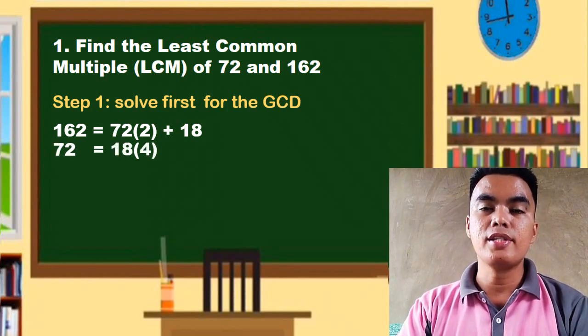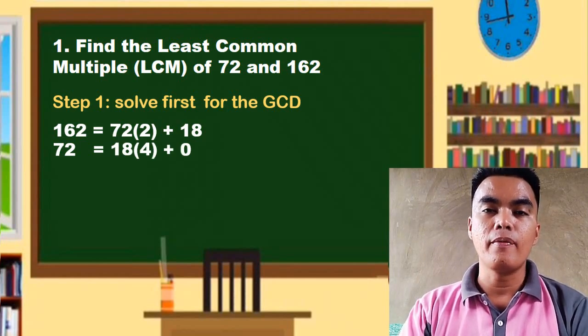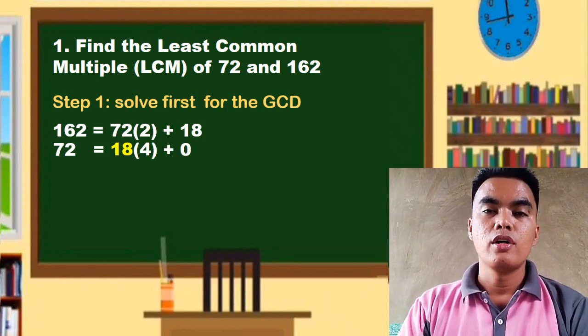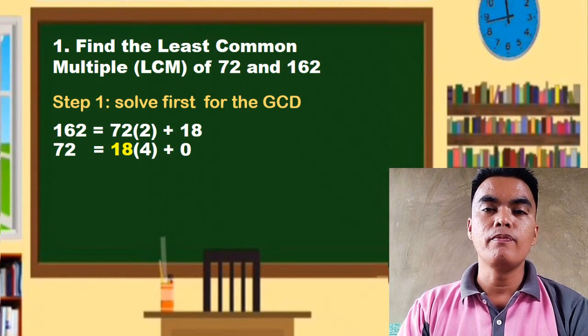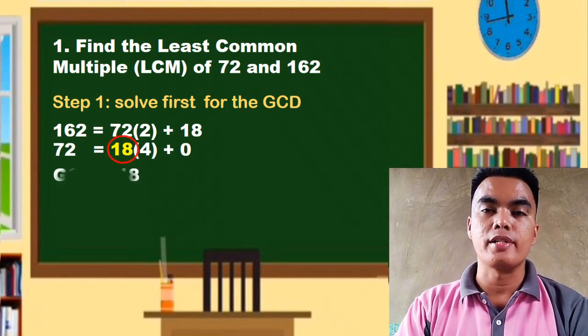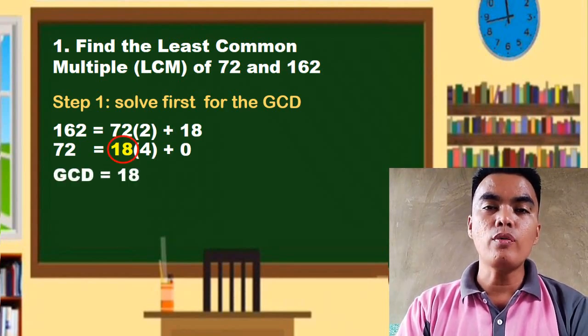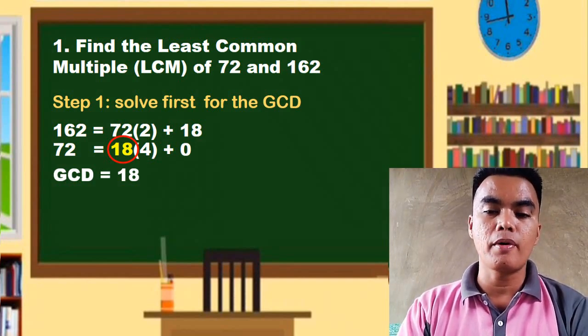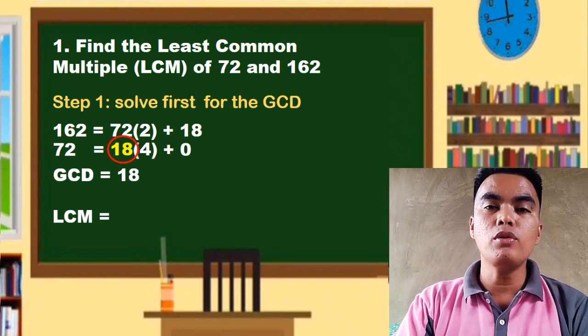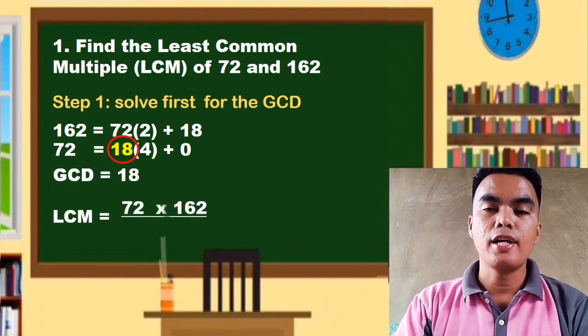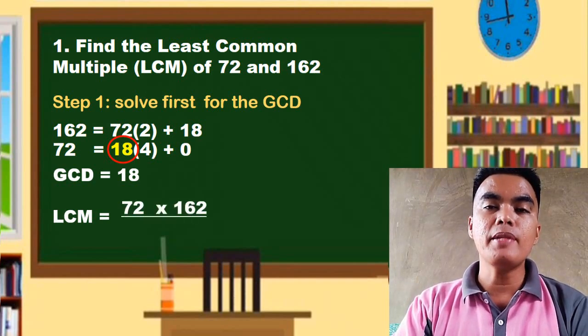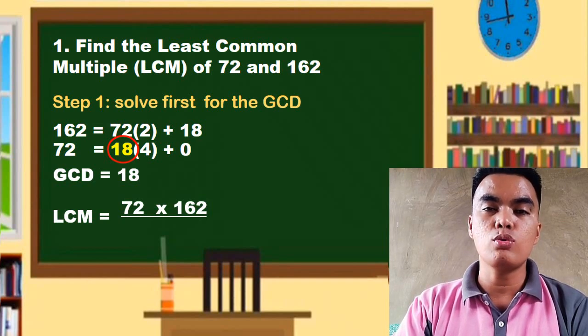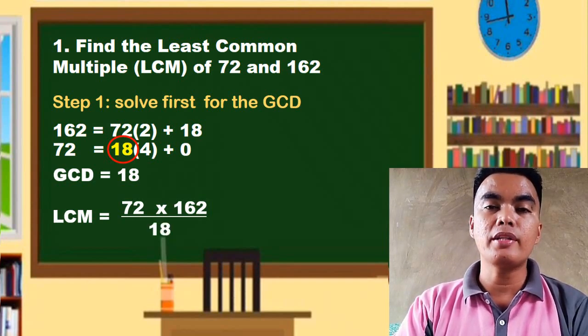plus 0. Now when you arrive at r equals 0, meaning you already solved the GCD of these two numbers and the GCD is 18. Now we will use this 18 to solve for the LCM of these two numbers. So the least common multiple of these two numbers is equal to 72 times 162 divided by their...